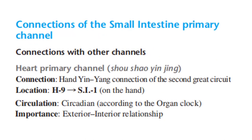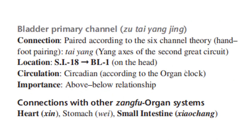Connections of the small intestine primary channel: Connection with the heart primary channel — a hand yin-yang connection of the second great circuit — located at Heart 9 and SI1 on the hand, with exterior-interior relationship. Connection with the bladder primary channel — paired according to the six-channel system, hand-foot pairing, tai yang axis of the second great circuit — located at SI18 and Bladder 1 on the head.